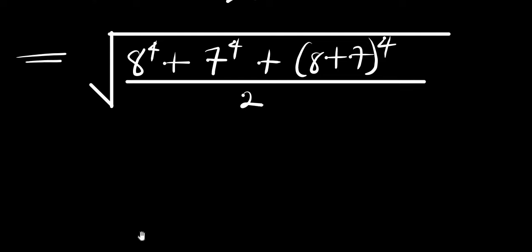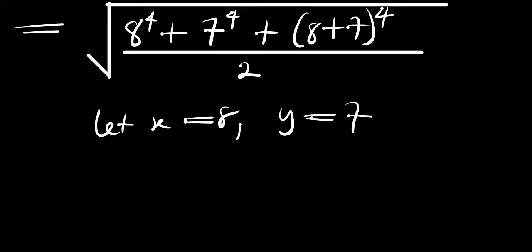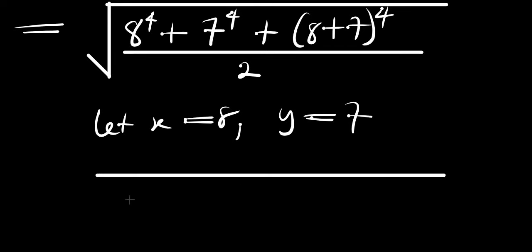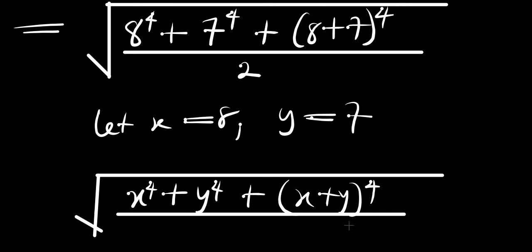So we can say let x equal 8 and y equal 7. Then we are going to have the square root of x power 4 plus y power 4 plus (x plus y) power 4, and everything here will simply be divided by 2.